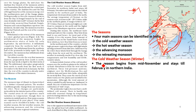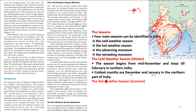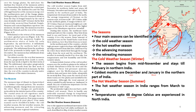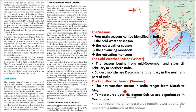The cold weather season starts from mid-November and lasts till February. In northern India, the coldest months are December and January. The hot weather season ranges from March to May, with temperatures up to 48 degrees Celsius in northern India. In the peninsular region, temperatures remain lower due to the moderating influence of the surrounding oceans.